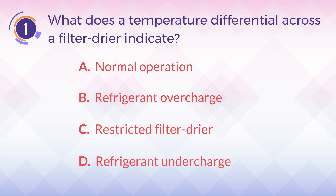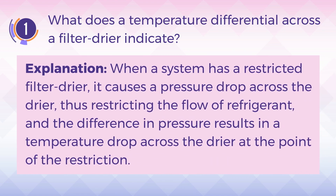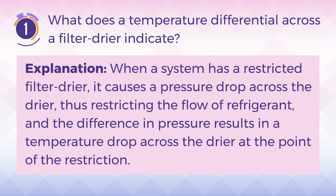The answer is C. Restricted filter dryer. Explanation: When a system has a restricted filter dryer, it causes a pressure drop across the dryer, thus restricting the flow of refrigerant, and the difference in pressure results in a temperature drop across the dryer at the point of the restriction.